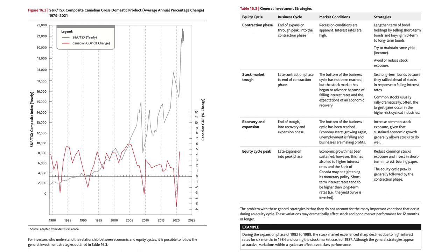For the equity cycle peak, corresponding to late expansion into peak phase of the business cycle: economic growth has been sustained; however, this has led to higher interest rates and the Bank of Canada may be tightening its monetary policy. Short-term interest rates tend to be higher than long-term rates — in other words, the yield curve is inverted. The strategy here: reduce common stock exposure and invest in short-term interest-bearing paper. The equity cycle peak is generally followed by the contraction phase.